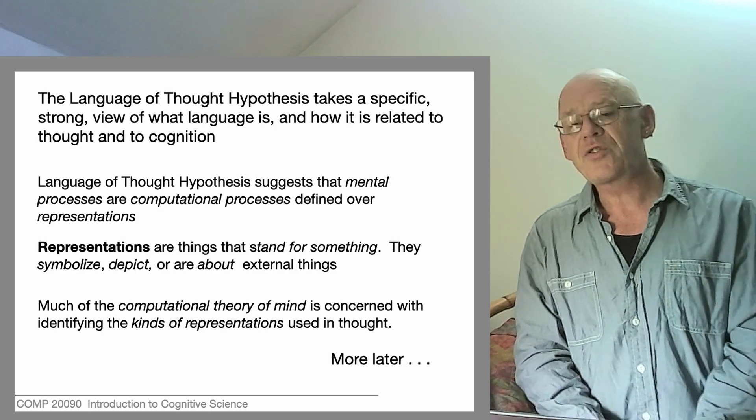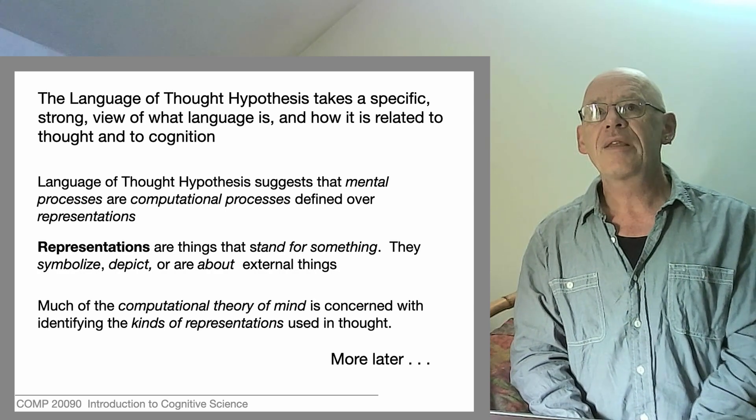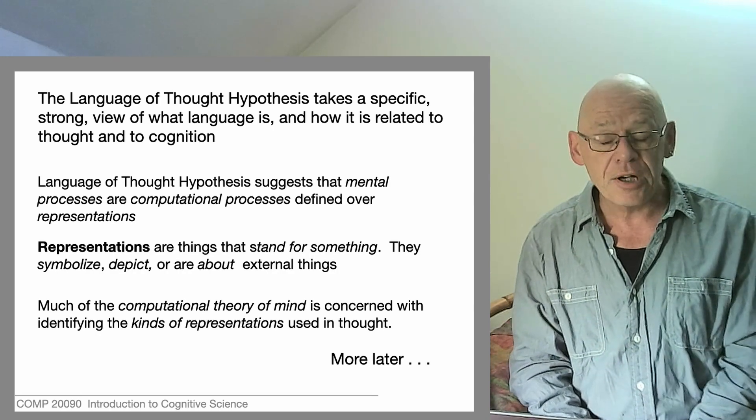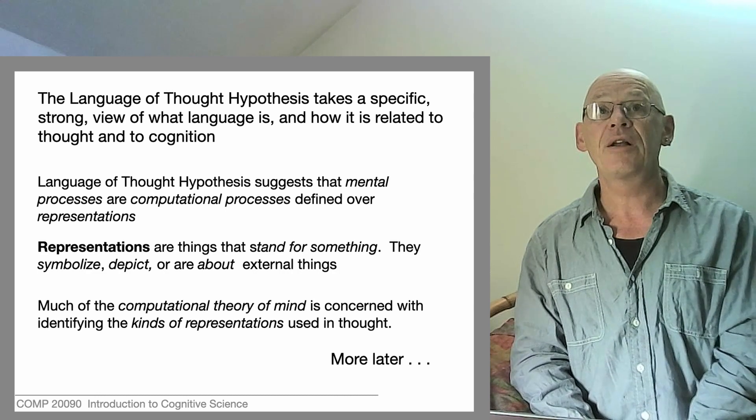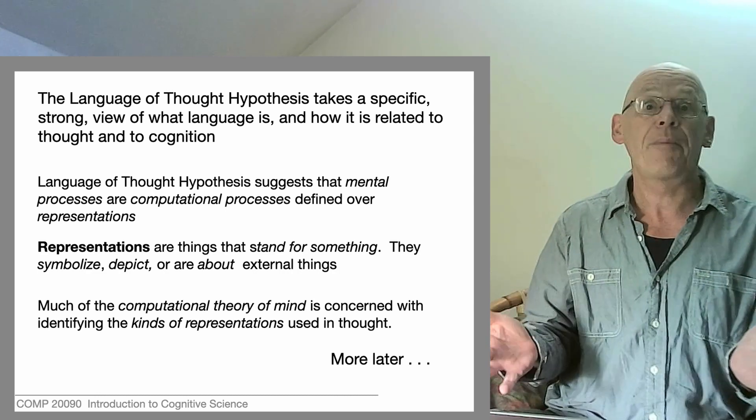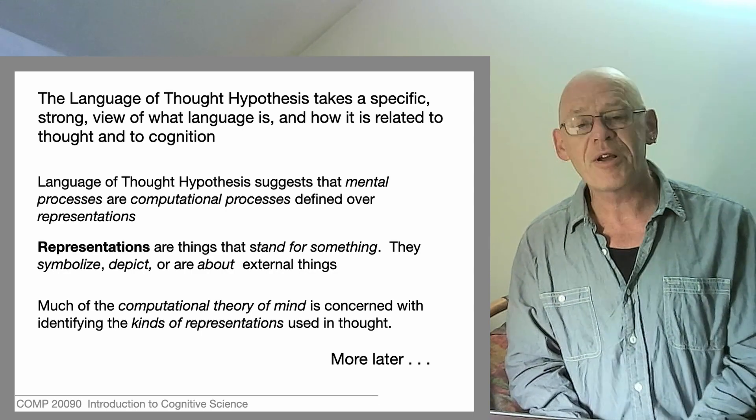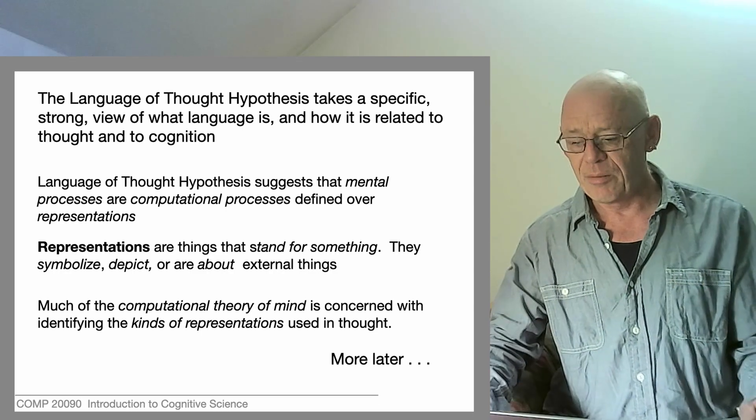So you can see that Jerry Fodor is thinking here in a way that is going to become central to the computational theory of mind, a theory of mind that's by far the most popular theory of mind these days, but is by no means the only theory of mind. So we'll be coming back to these ideas a little bit later.